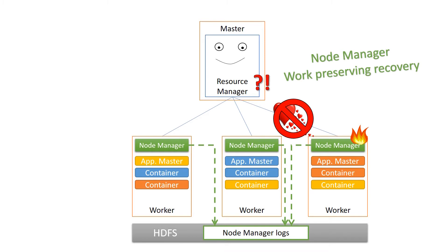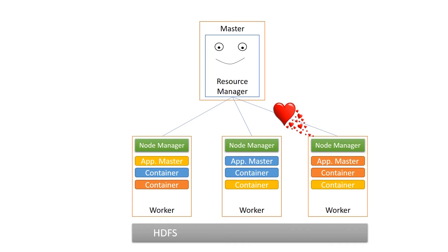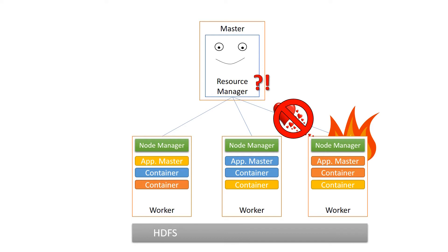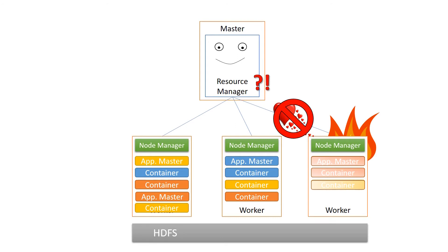So what will happen when a whole worker fails? Well, again we rely on the node manager to send heartbeats to the resource manager, so the resource manager will notice there are no heartbeats. But what will happen with the app master and the containers? We still have the node manager work-preserving logs, but I'm not sure if they help out — I have to try that out on a test system sometime. But if the worker has gone for good, the resource manager will start the app master on a different worker, and the app masters will make sure the necessary containers will be created on different nodes where they have to do their work again.